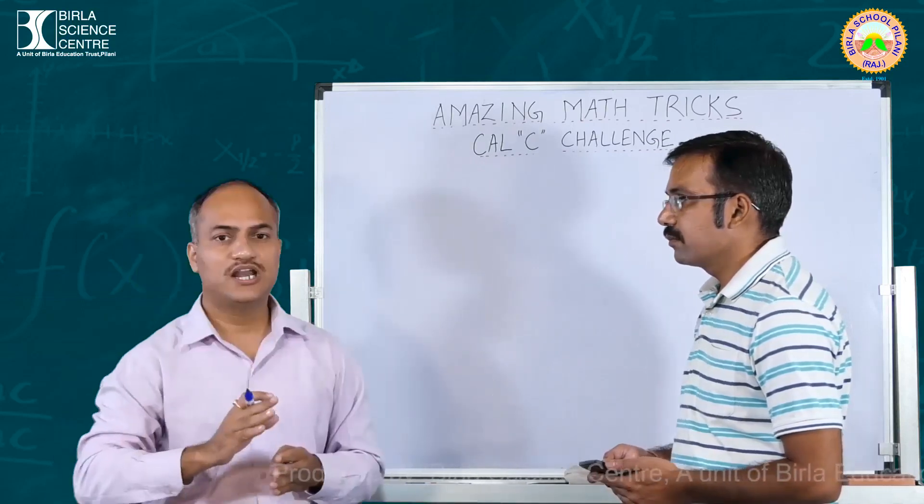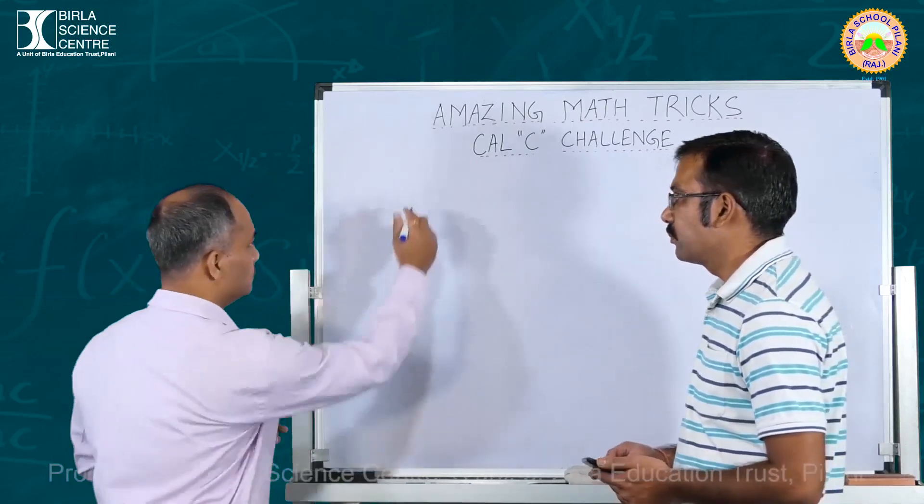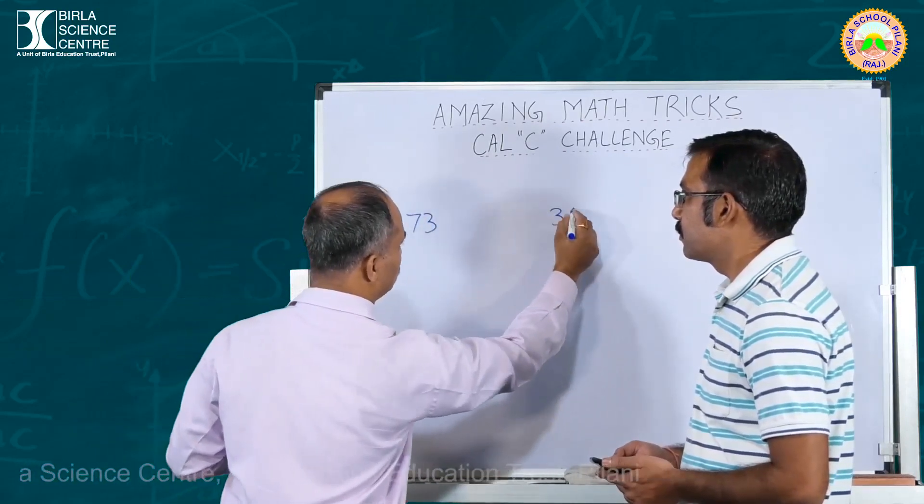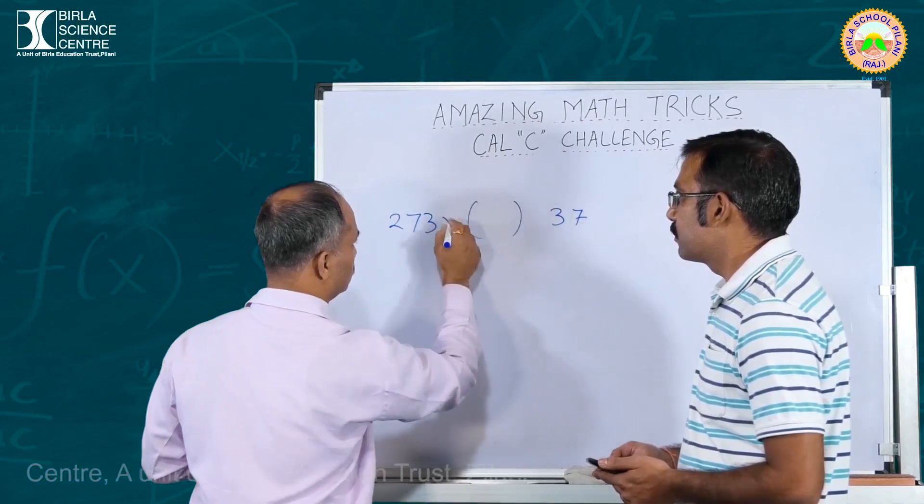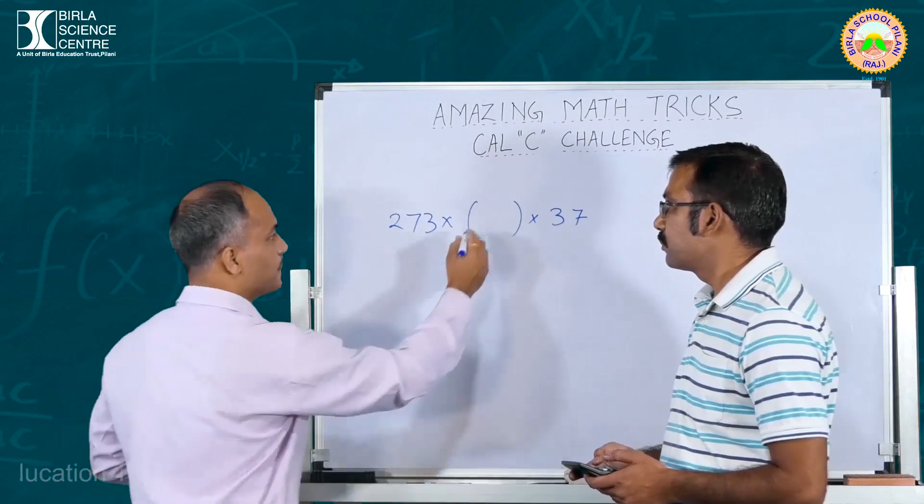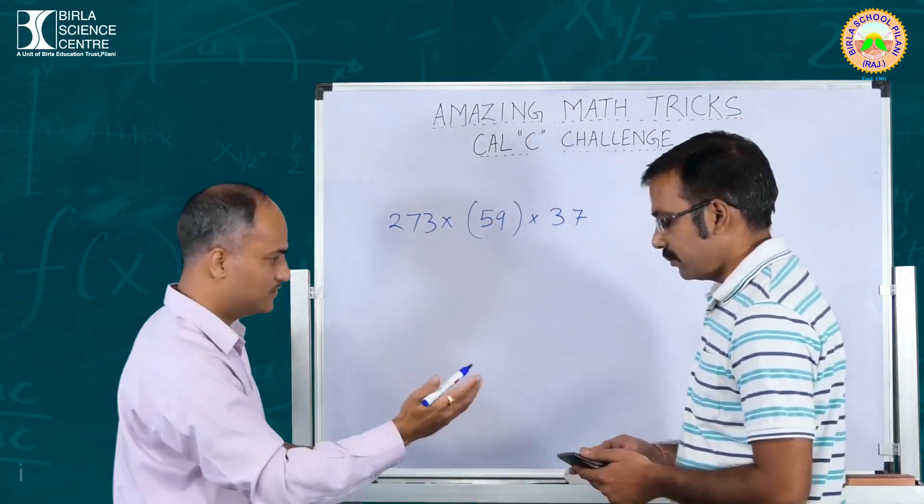You can tell any two digit number. Let us start. Please tell any two digit number - 59. Now both of us will compute, so start. Yes sir, is it the same answer? Yes. Okay, let us do it one more time and see what happens.